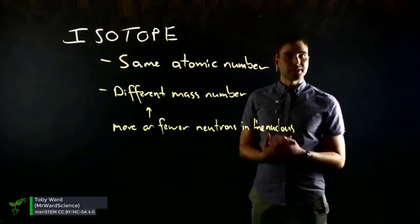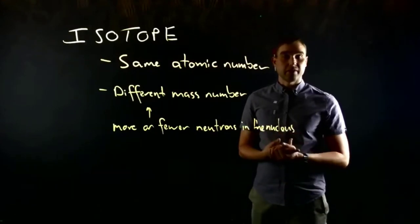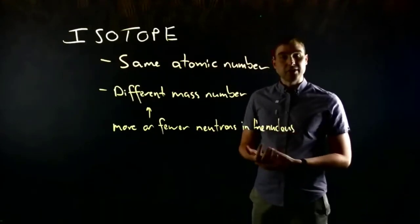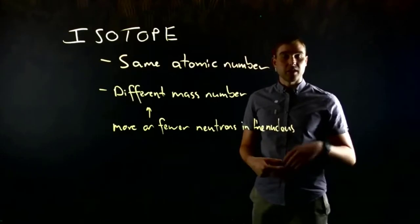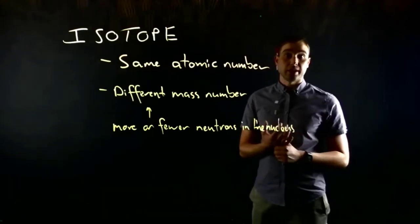An isotope is when we're comparing two atoms—they have the same atomic number but a different mass number. The reason they have a different mass number is because they have either more or fewer neutrons than a regular atom would have.